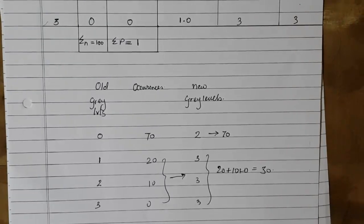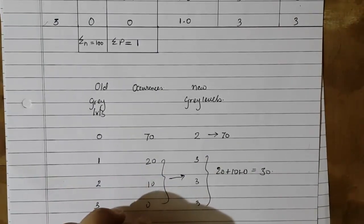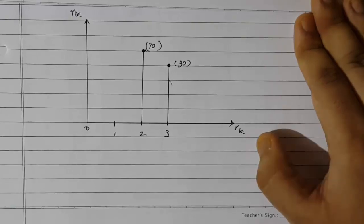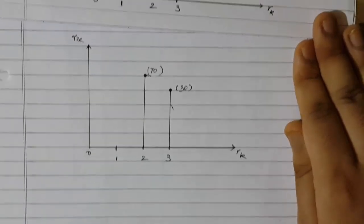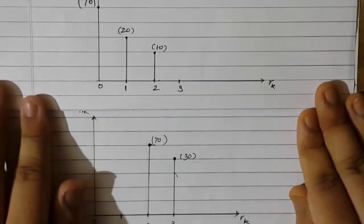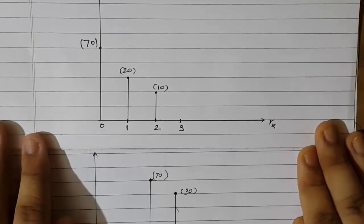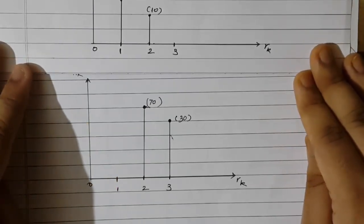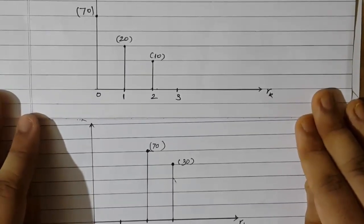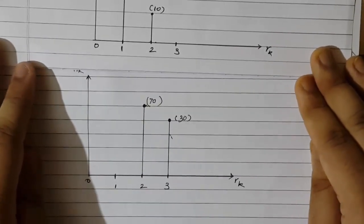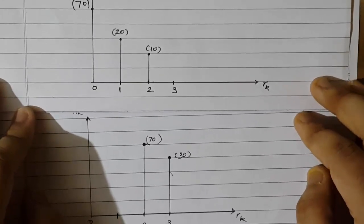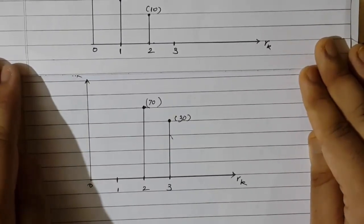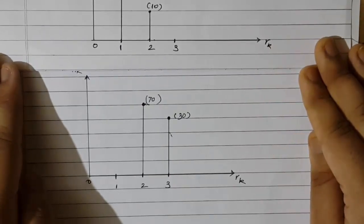Using these new gray levels and their distribution, we plot the new histogram. Comparing it with the original histogram, which was roughly triangular in shape, the output histogram after equalization is well distributed. The values that were saturated at gray level 0 have been shifted to gray level 2, and gray level 3, which had no value originally, now has some value. The result is a well spread-out profile, and we can say that the histogram is equalized.